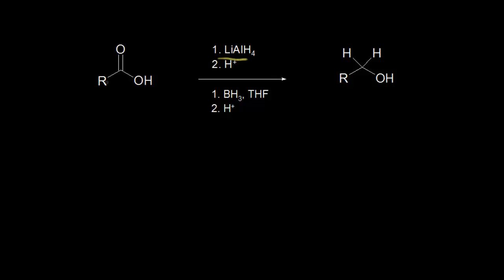If you add lithium aluminum hydride to a carboxylic acid and in your workup add a source of protons, you can reduce your carboxylic acid to an alcohol. If you think about the oxidation state of this carbon and compare it to the carbon on your alcohol, you'll see there's been a decrease in the oxidation state, so there's been a reduction. Lithium aluminum hydride is one way to reduce a carboxylic acid. You could also accomplish this with borane, and borane is actually more chemoselective, so we'll talk about that at the end of the video.